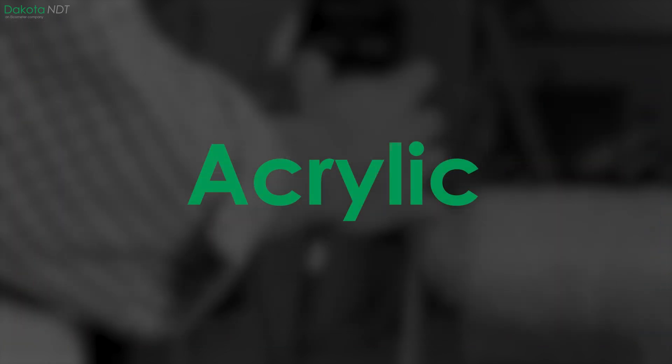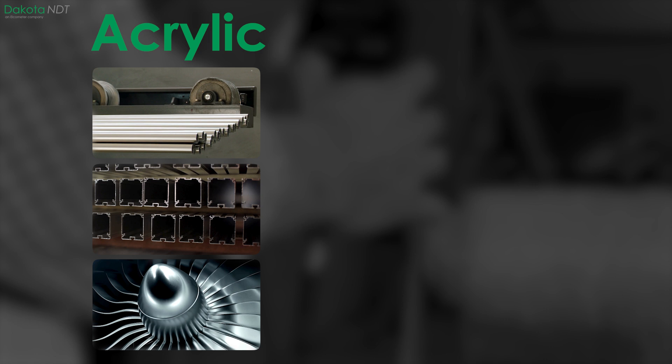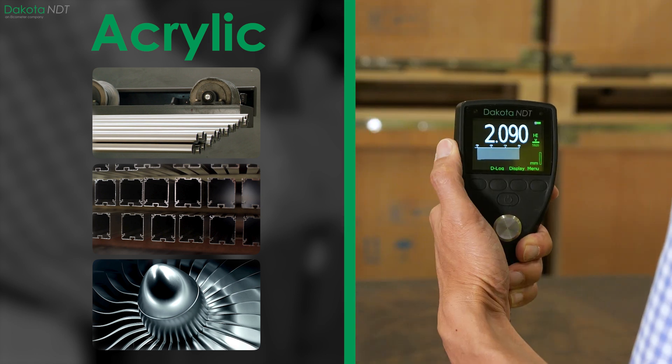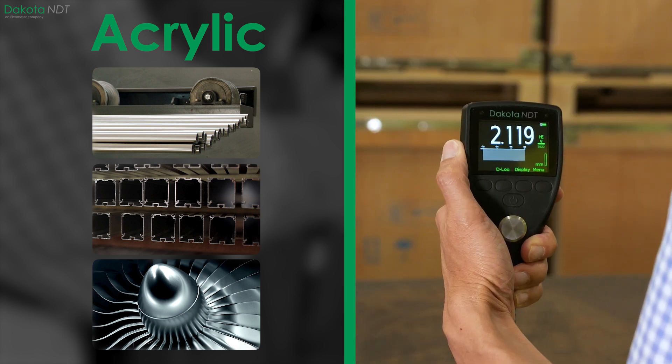Acrylic delay lines are suitable for measuring on steel, aluminium, titanium and other thin metals, with the gauge in either interface echo or echo echo mode.